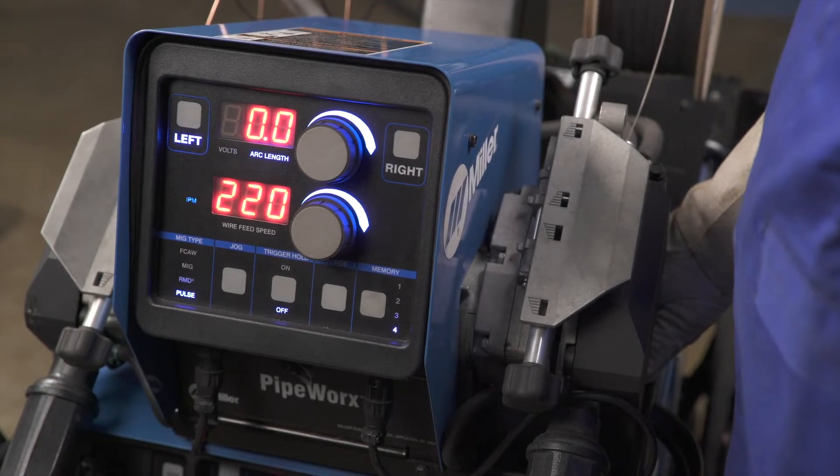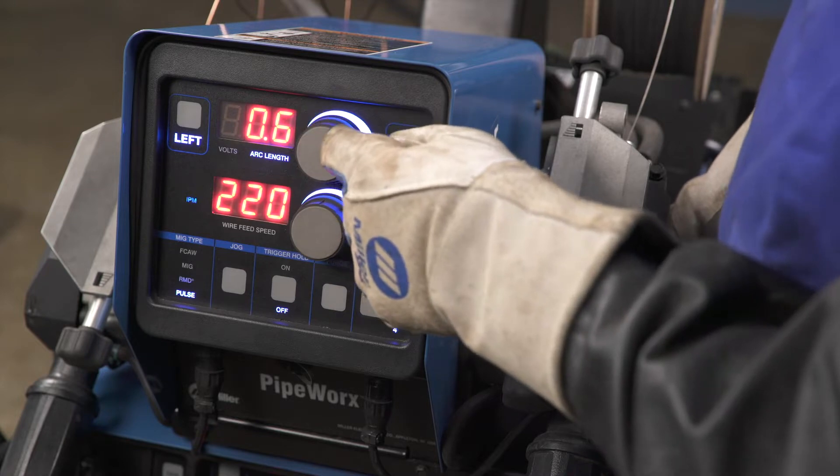The arc length refers to the end of the wire to the weld puddle, not to be confused with stick-out or tip-to-work distance.